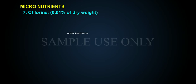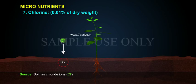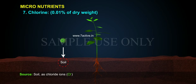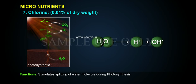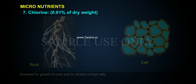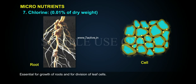Chlorine constitutes 0.01% of dry weight and is sourced from soil as chloride ions (Cl-). Its functions include stimulating the splitting of the water molecule during photosynthesis, and it is essential for root growth and division of leaf cells.